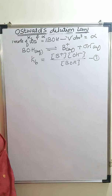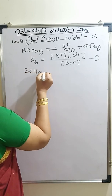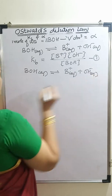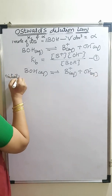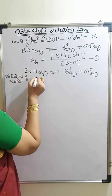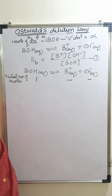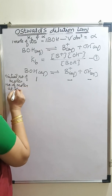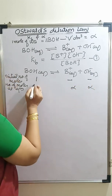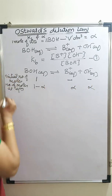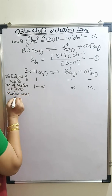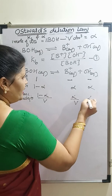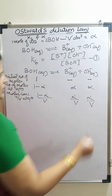Kb equals [B⁺][OH⁻] / [BOH]. I will call this equation 1. Writing the reaction again: initial number of moles of BOH = 1. As the reaction proceeds to equilibrium, number of moles at equilibrium: BOH = 1 − alpha, B⁺ = alpha, OH⁻ = alpha. Molar concentration at equilibrium (N/V): BOH = (1 − alpha)/V, B⁺ = alpha/V, OH⁻ = alpha/V. This is equation 2.